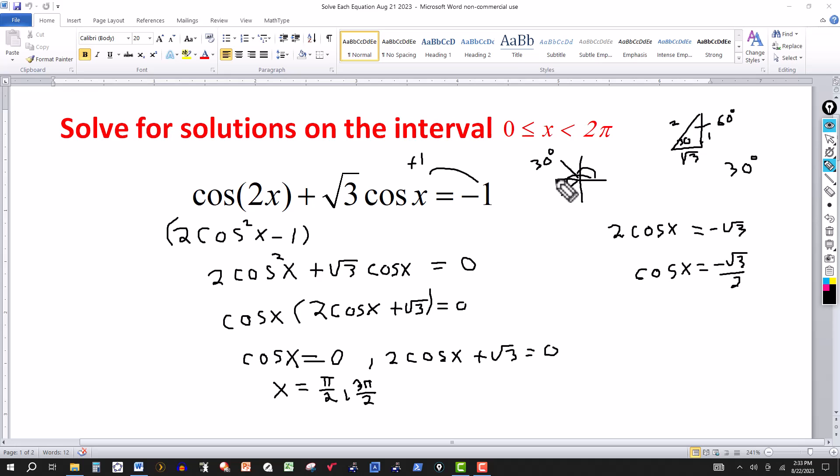Again, where this angle is 30 degrees. So basically in degrees, one angle would be 150. So we're looking at 150, an angle in the second quadrant, and 210, an angle in the third quadrant.